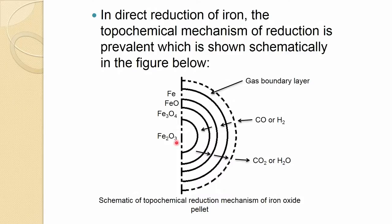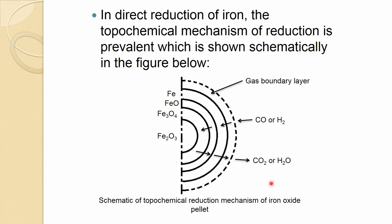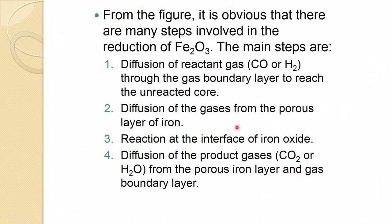This process continues until the entire pellet has been reduced to iron. This sort of reaction — involving diffusion of reactant gas, diffusion out of product gases, interface reaction, and formation of boundary layers — is known as the topochemical reduction mechanism. It is not only associated with iron oxide; other similar reactions can also follow this mechanism. This is a typical topochemical reaction with many steps involved.